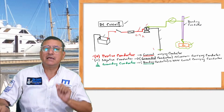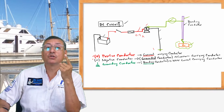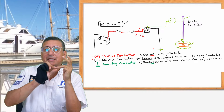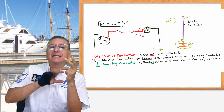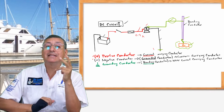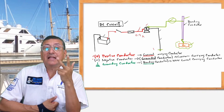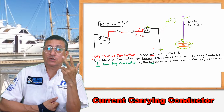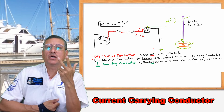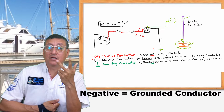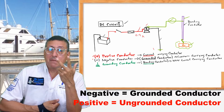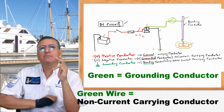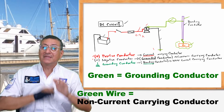Let's refresh quickly. In DC we have the red positive conductor, the black negative, and the green, which is the grounding conductor to drain static electricity into the bonding. Remember: the positive and the negative are both current-carrying conductors. The negative is the grounded conductor and the positive is the ungrounded conductor, but both are current-carrying conductors. The green one connected to the bonding system is a non-current-carrying conductor.